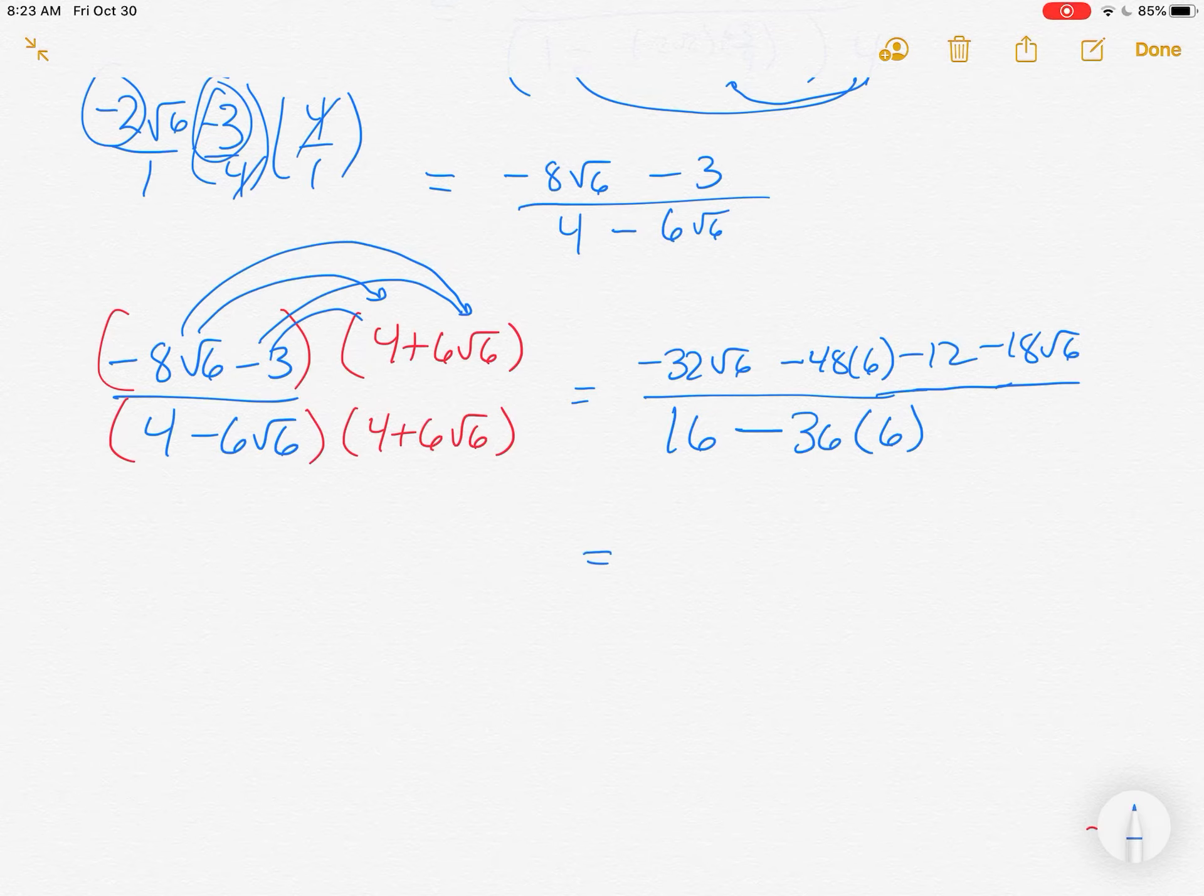So let's combine the like terms up top. A negative 32 root 6 and a negative 18 root 6 is negative 50 root 6. 48 times 6, I figured that out already, that's 288, but negative. So a negative 288 and a negative 12 work together for negative 300.